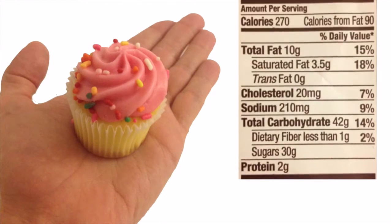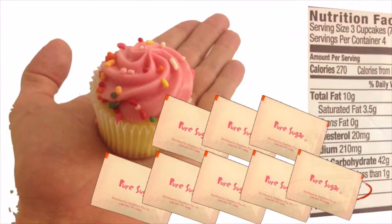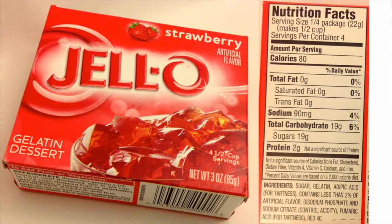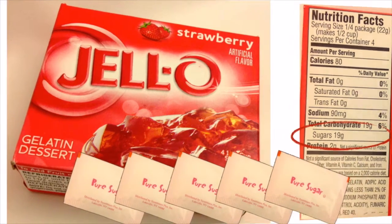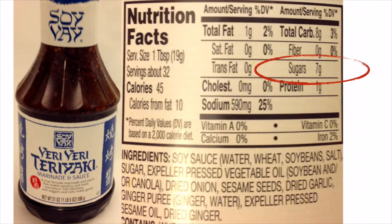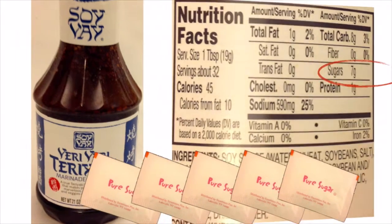Just 3 of these tiny mini cupcakes provide 42 grams of carbs, 30 grams of which are added sugar. It's as if you had added 7 and a half of your sugar packets. One serving of this strawberry gelatin dessert provides 19 grams of added sugar, almost 5 sugar packets, and that's assuming you make 4 servings out of this small package. Each tablespoon of this teriyaki sauce contains 7 grams of added sugar. If you use 3 tablespoons, you get 21 grams of added sugar. Scary, isn't it? That's more than 5 of your sugar packets.